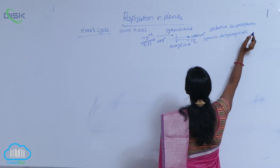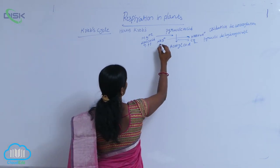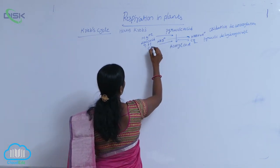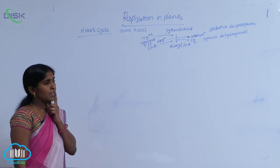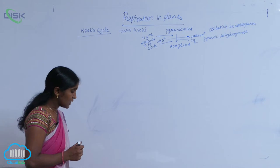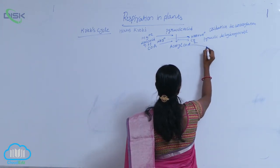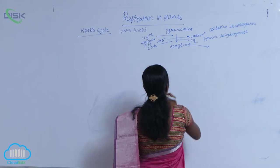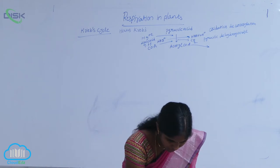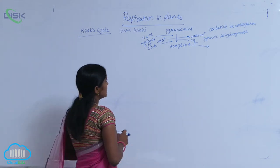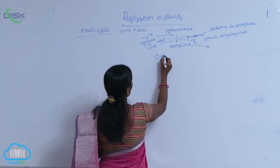Dehydrogenase enzyme. Then the acetyl-CoA is released. CoA is also needed for the production of acetyl-CoA. The next reaction is a condensation reaction. The condensation reaction means here the acetyl-CoA is condensed with oxaloacetic acid.